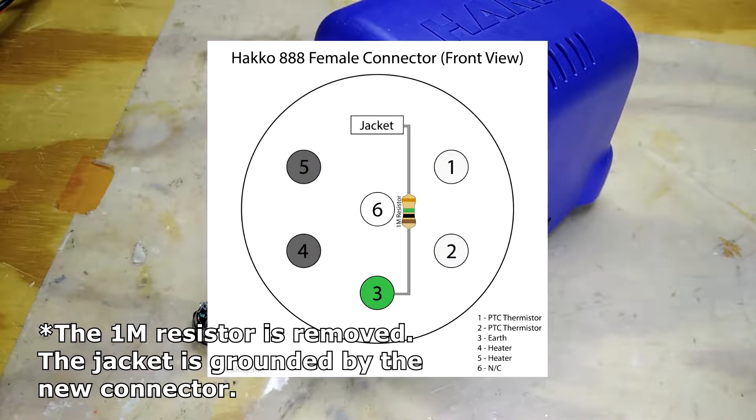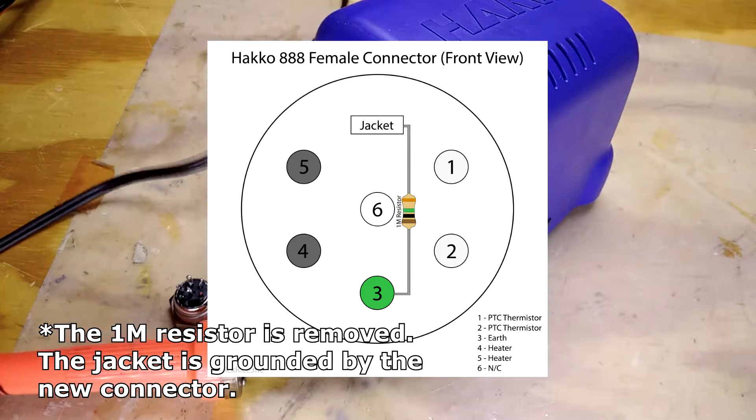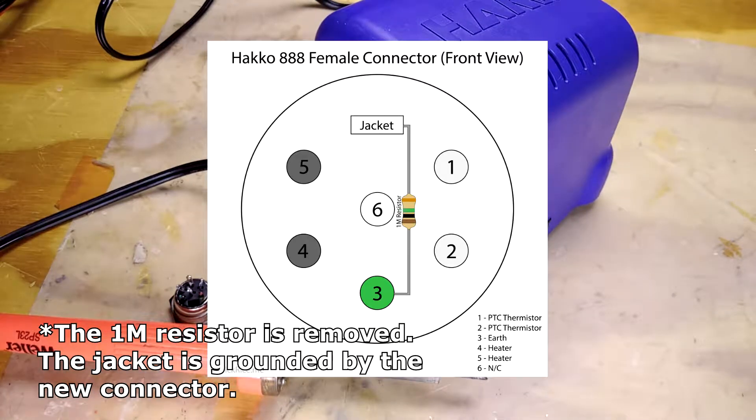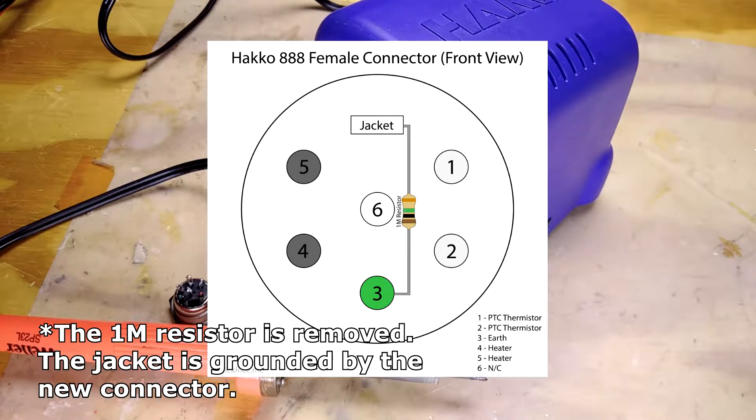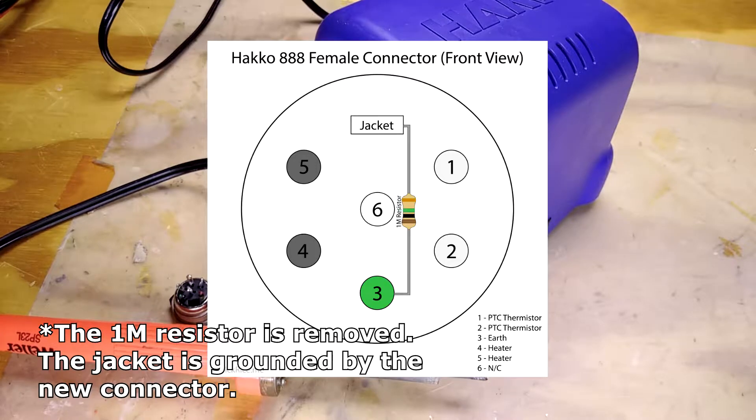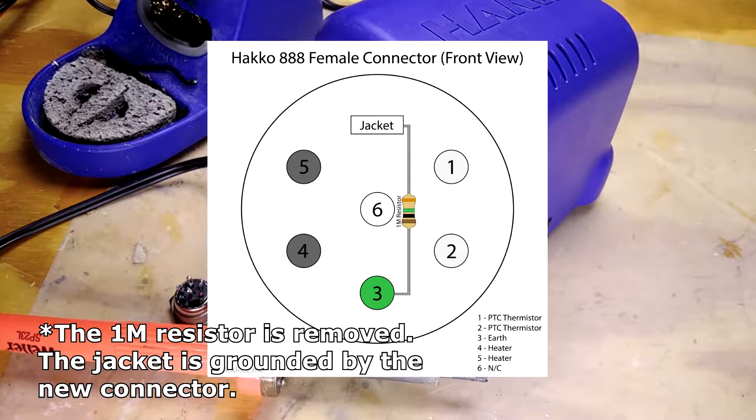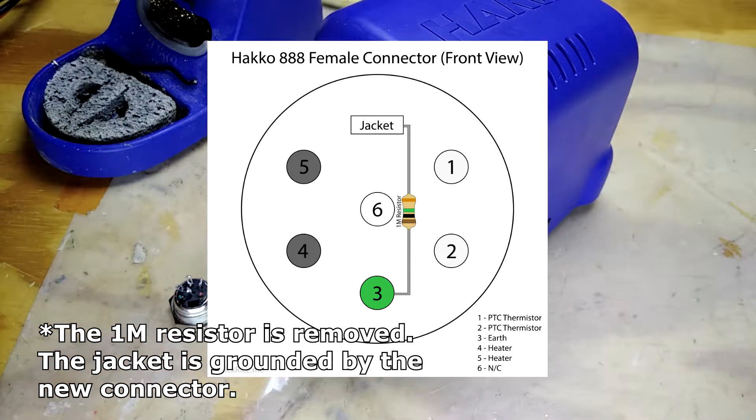I then disassembled the case of the Hakko. I attached the wires to the new connector and soldered the wires following a wiring diagram I made. After tightening up the nut to secure the new connector, I reassembled the housing.